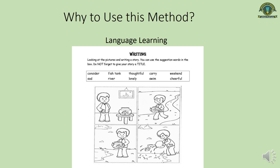For example, the words given here are: consider, fish tank — which is also called aquarium — thoughtful, carry, weekend, sad, river, lonely, swim, cheerful. You can come up with many other options. If the options are given to you, you can construct your own picture and your own story using these words.